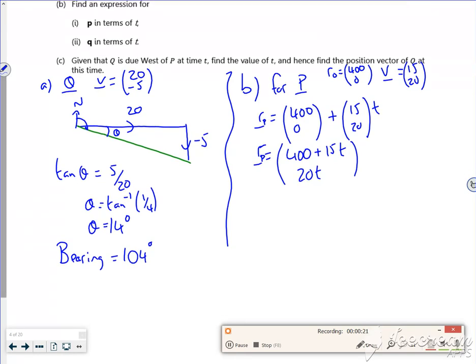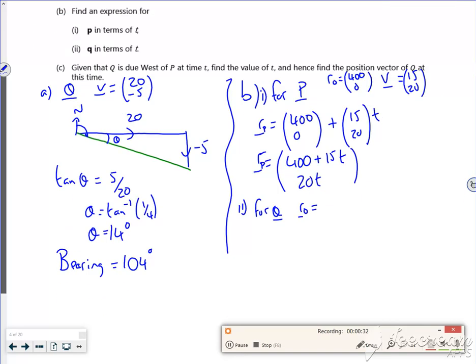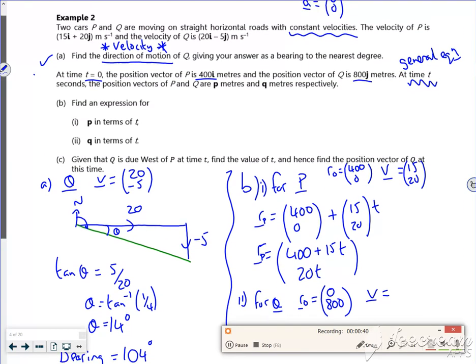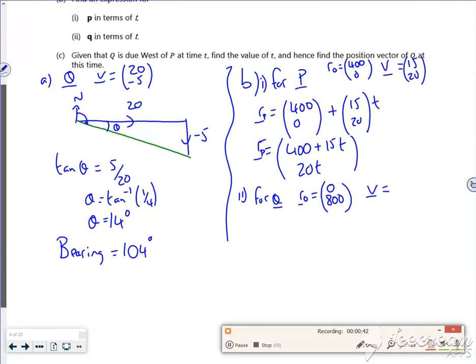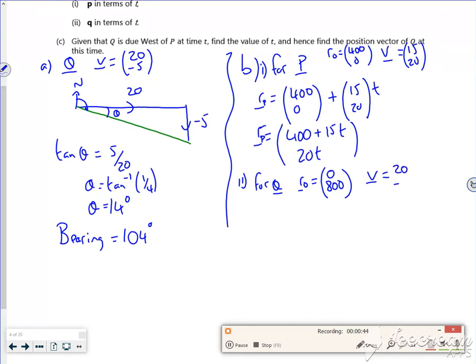And then for Q, R0 was 800j, and the speed was 20 minus 5, so R0... sorry, R...